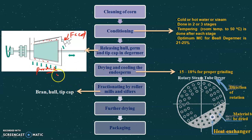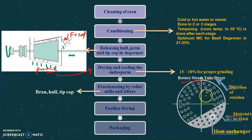After de-germing, the products are dried to reduce the moisture content, and then cooled. This drying is done by a special dryer known as a rotary steam tube dryer. The rotary steam tube dryer is a circular tub-like structure containing pipes that carry steam as the heating medium. These pipes heat the product and remove moisture from it.